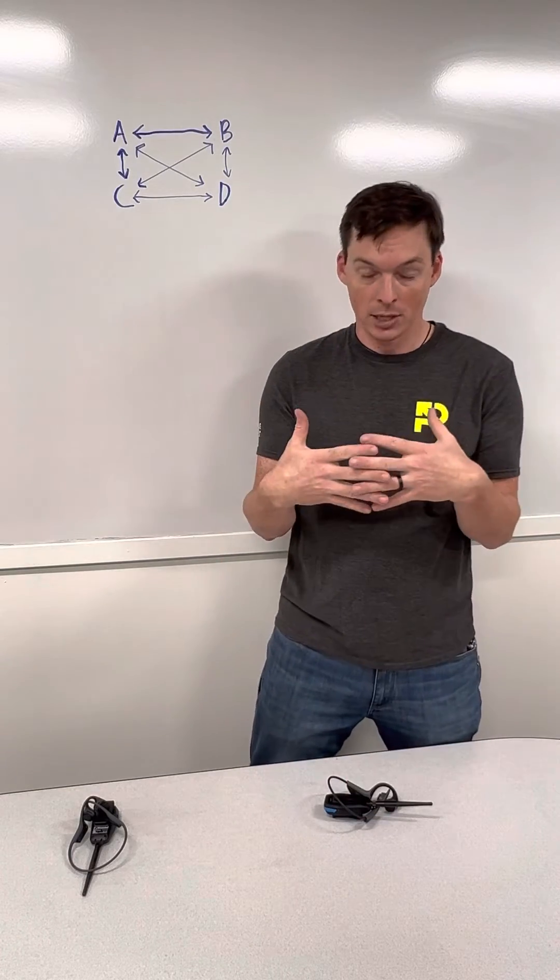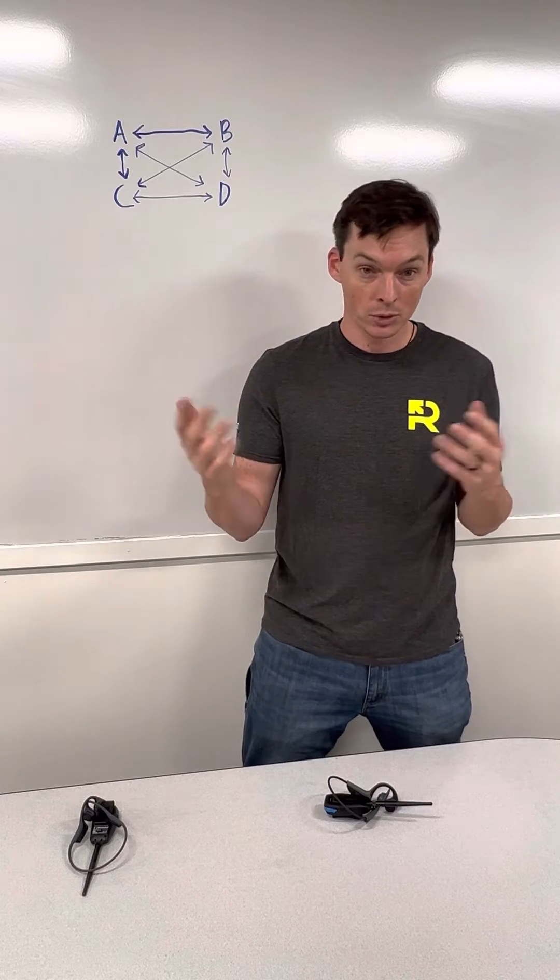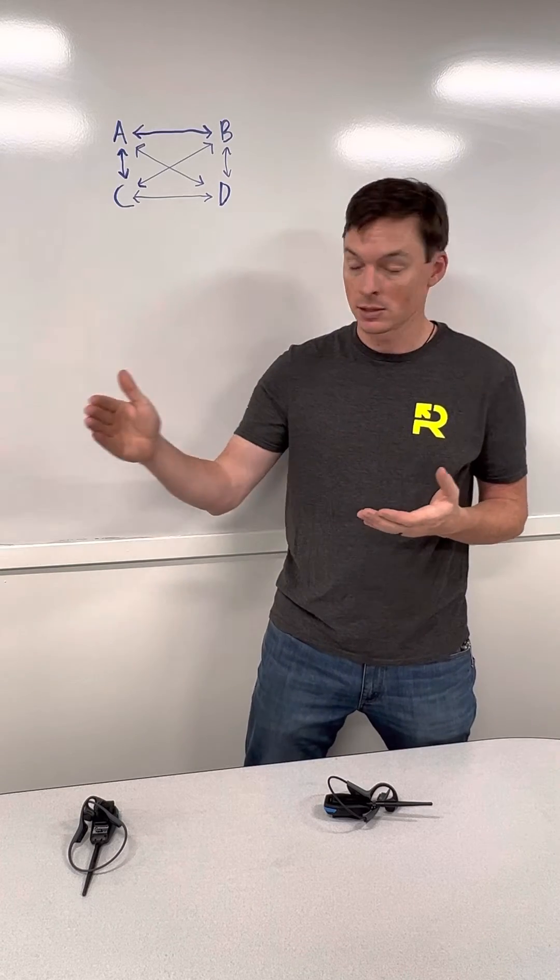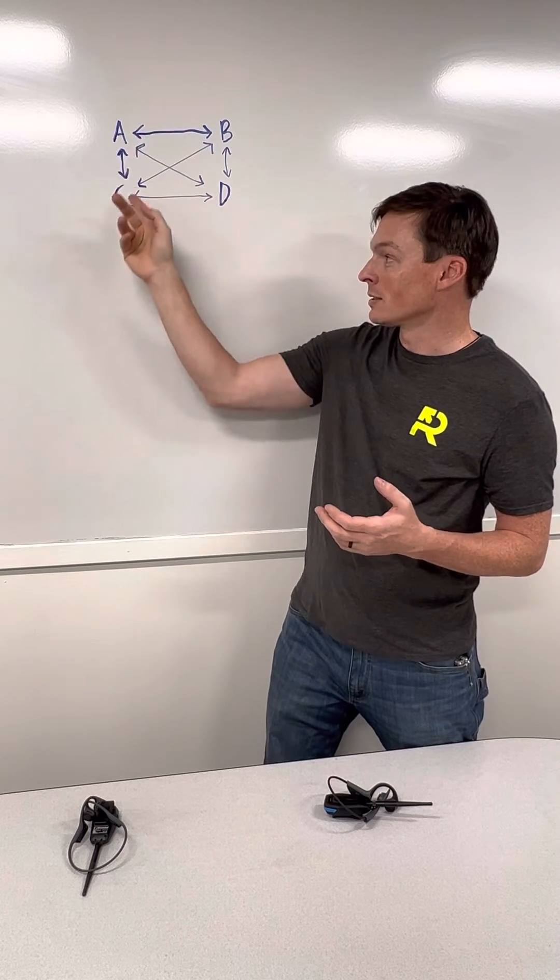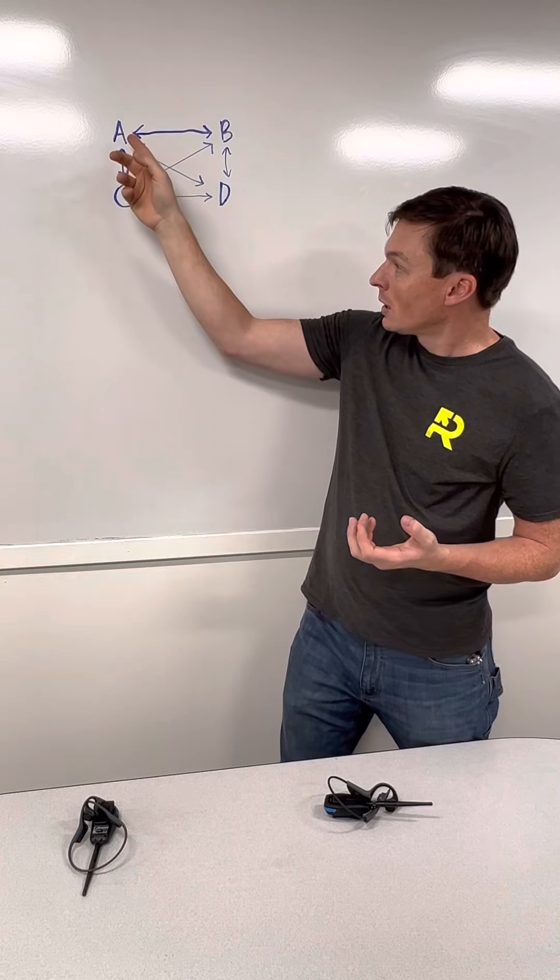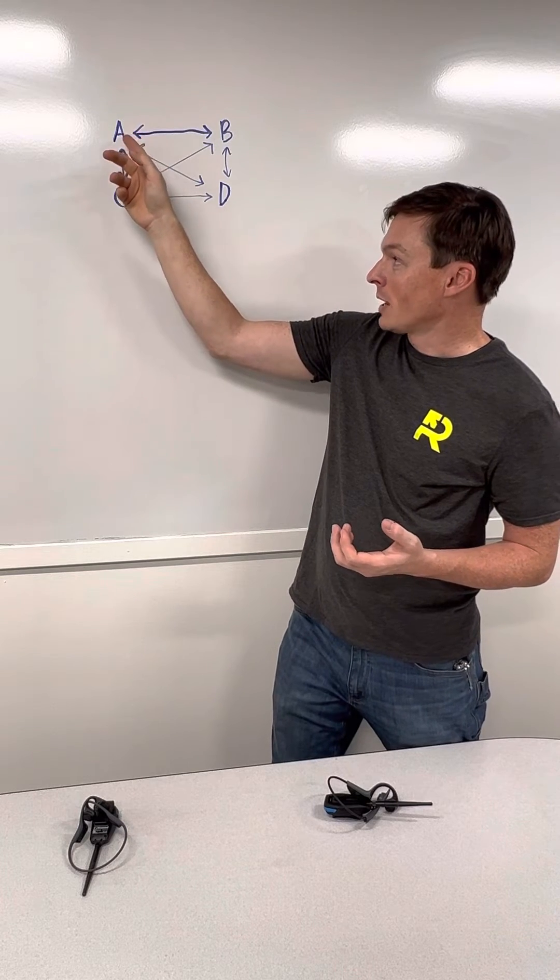creates what's called a mesh network. So a mesh network is different from other Bluetooth networks where you had to have everything connected in series. So with a mesh, you've got A talking to B, B is also connected to D and C. So what that means is instead of having a chain connection where you have to have A